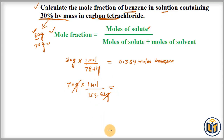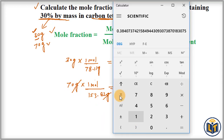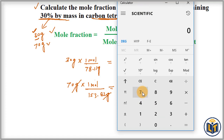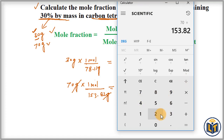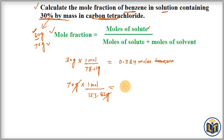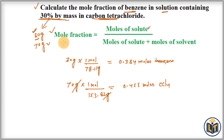We divide 70 by 153.82 and the value we get is 0.455. So the moles of carbon tetrachloride is 0.455 moles. Now we can apply the formula for the mole fraction of benzene, which is the solute.